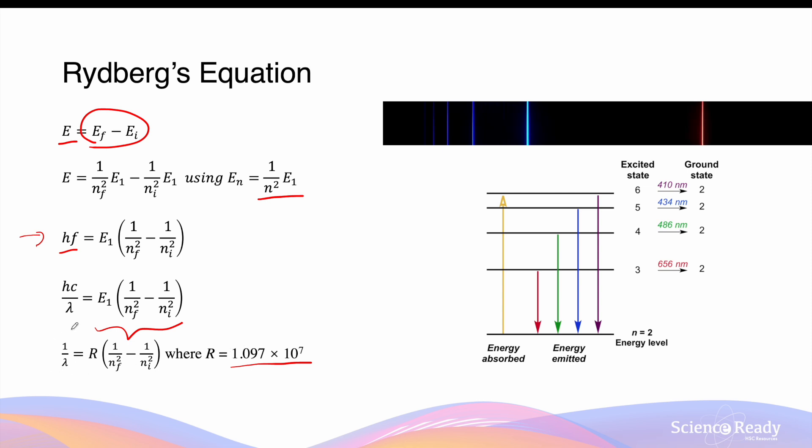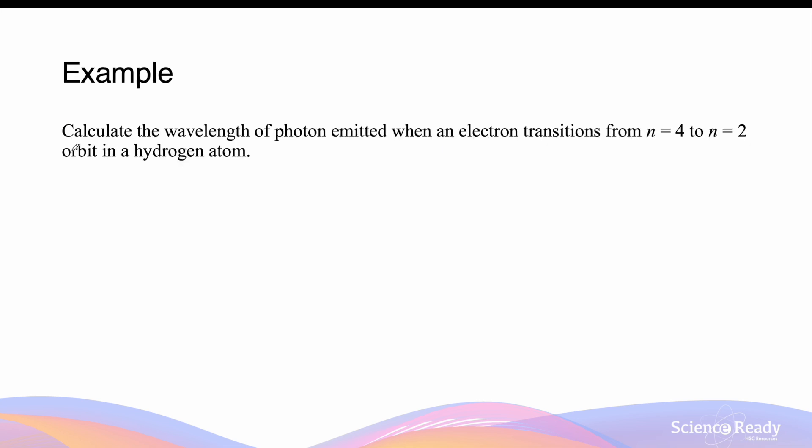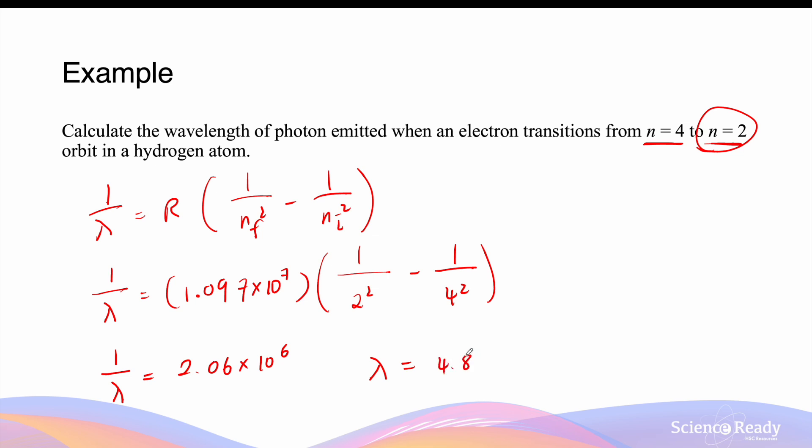Rydberg's equation allows us to calculate the wavelength of a photon emitted when the electron transitions from a higher energy level to a lower energy level in a hydrogen atom. For example, calculate the wavelength of a photon emitted when an electron transitions from n equals 4 to the n equals 2 orbit in a hydrogen atom. So Rydberg's equation is 1 over λ equals r times 1 over nf squared minus 1 over ni squared. 1 over λ equals 1.097 times 10 to the power of 7 times 1 over 2 squared. So the n=2 orbit is the final orbit that the electron ends up in, minus 1 over 4 squared. So n=4 is the initial orbit number. And the reciprocal of the wavelength is 2.06 times 10 to the power of 6. So if we take the reciprocal, the answer is 4.86 times 10 to the power of -7 meters, or we can write this as 486 nanometers.